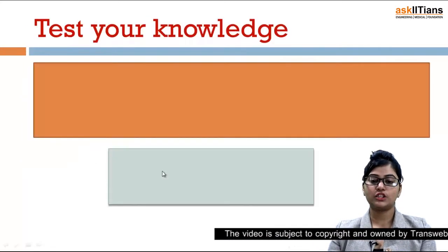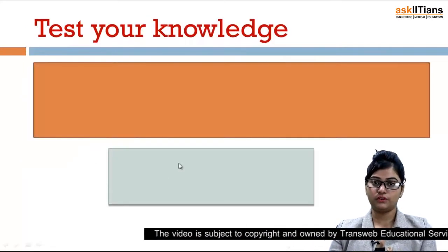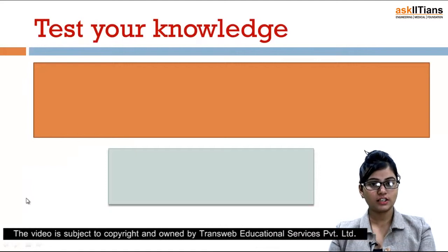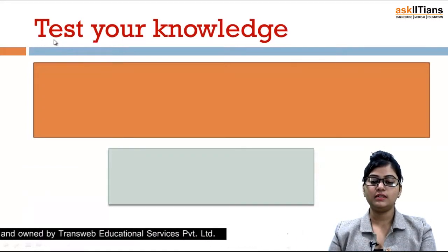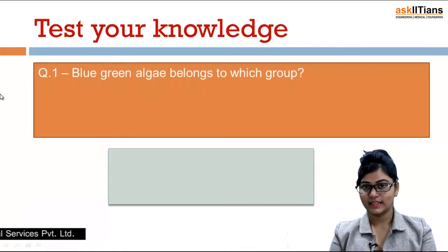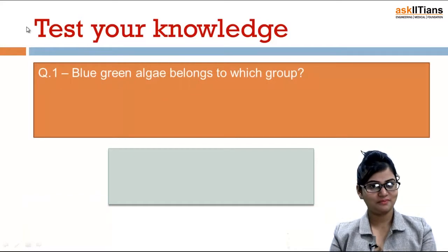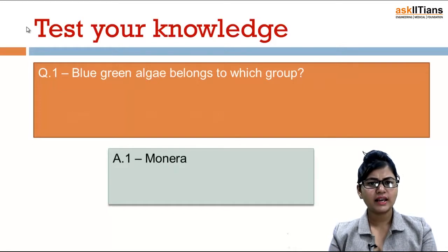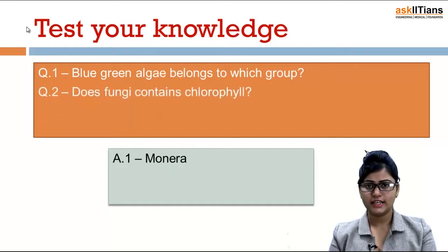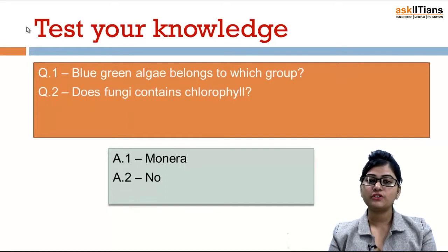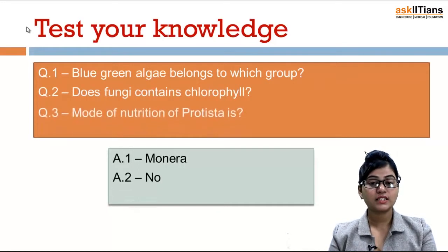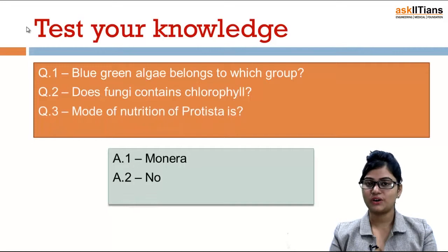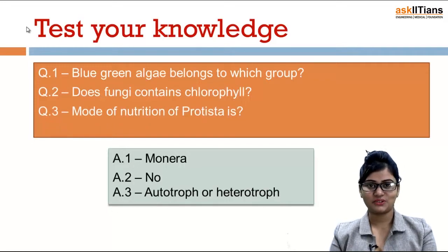Now a few questions to test your knowledge. First: blue-green algae belongs to which group? Remember — Monera. Second: does fungi contain chlorophyll? No. Third: the mode of nutrition of Protista is autotroph or heterotroph.